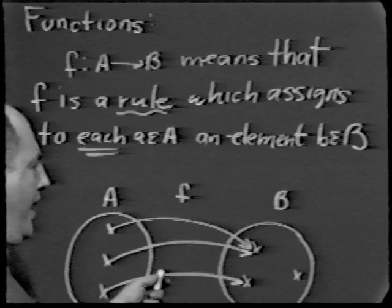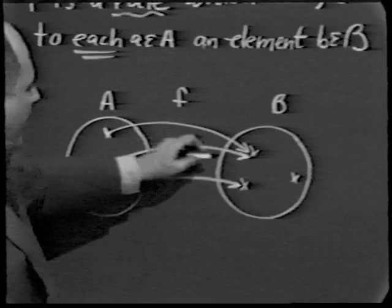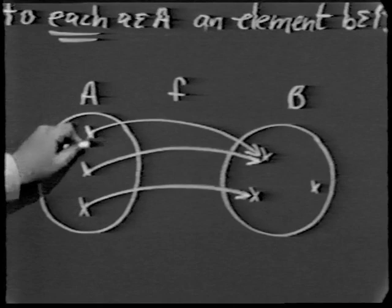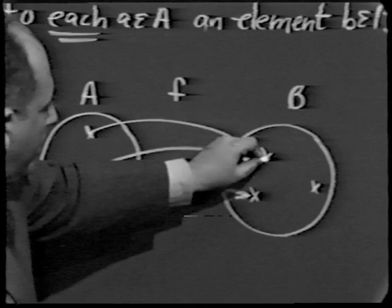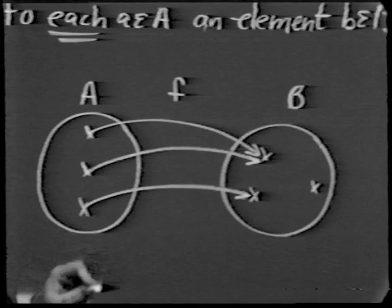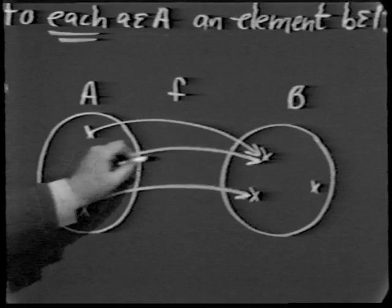We may visualize our sets as circles. What does the function do? The function assigns to each element of A an element of B. This element is mapped into this element by f. This element is mapped into this element by f. And this element is mapped into this one.